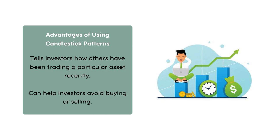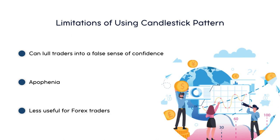However, there are limitations of using candlestick patterns. They can lull traders into a false sense of confidence. It's important to remember that the information displayed on the chart is price-based, and price is just one component of market action. Apophenia is the tendency to perceive a connection or meaningful pattern between unrelated or random things. Undoubtedly, candlesticks do form patterns; however, the meaning of those patterns can be up for interpretation. It is also less useful for forex traders because they mostly wait until the close of a candle before entering a trade, which leads to uncertainty on the next price movement.